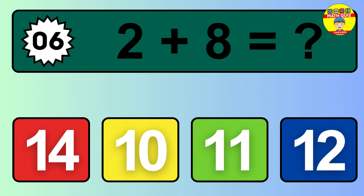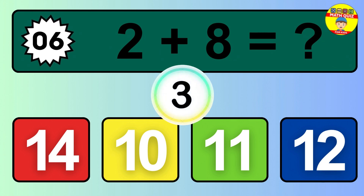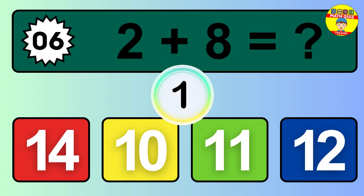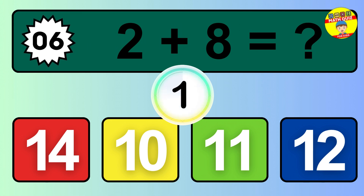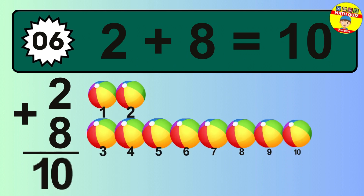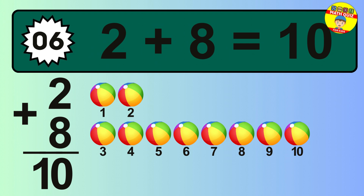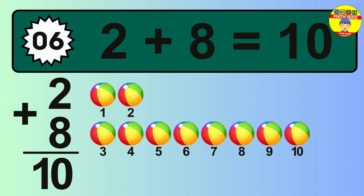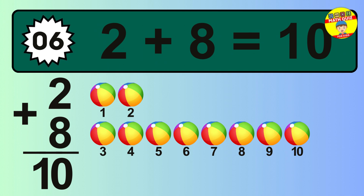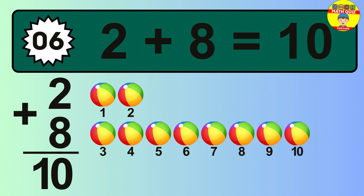Question 6. 2 plus 8 equals what? So the answer is 2 plus 8 is 10. Let's count it: 1, 2, 3, 4, 5, 6, 7, 8, 9, 10.